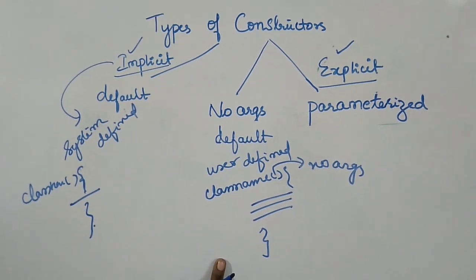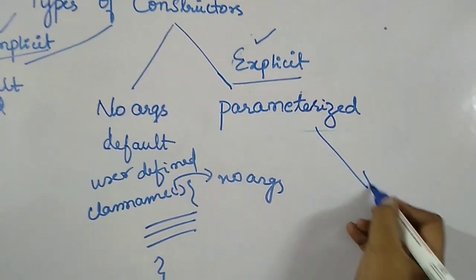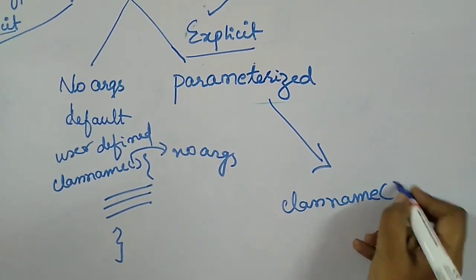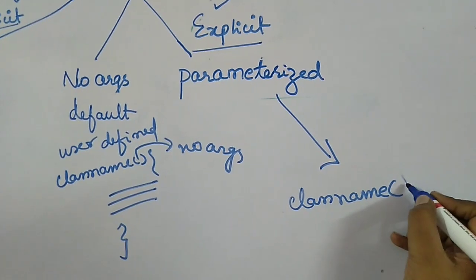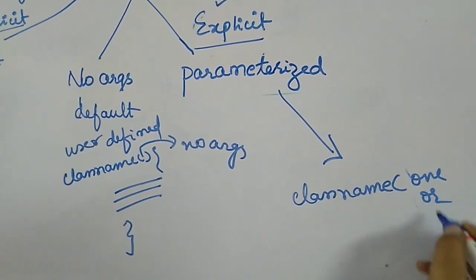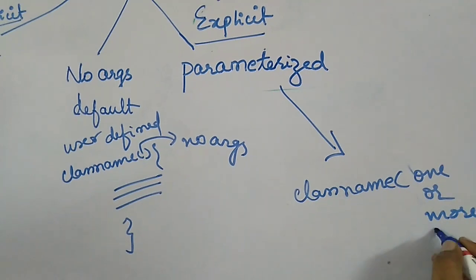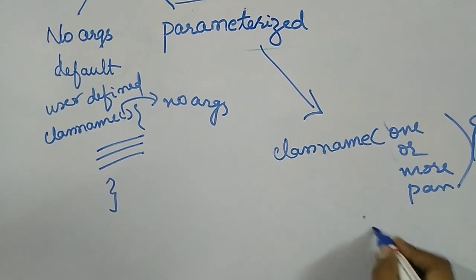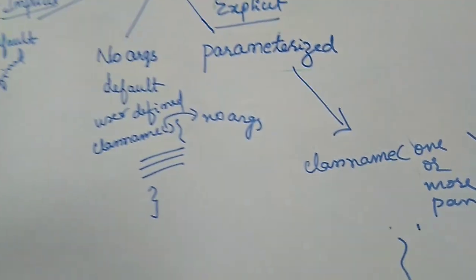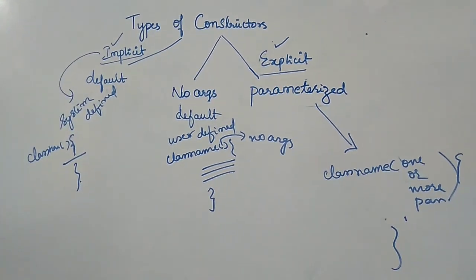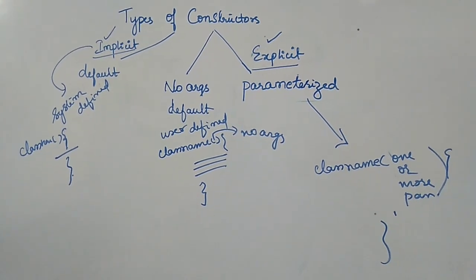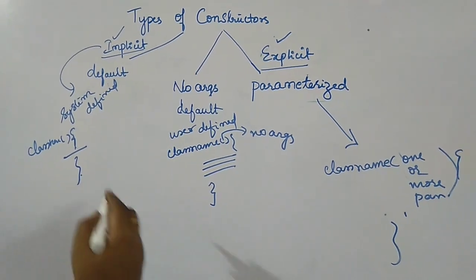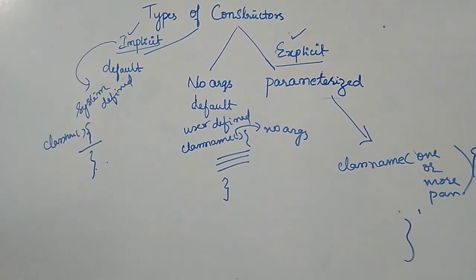Coming to the parameterized constructor — it means the constructor will have one or more parameters in it, a parameter list. This is called a parameterized constructor. Remember one very important point: if you write your own constructor in the program, the default constructor will not be added into the program.